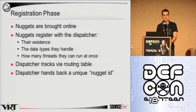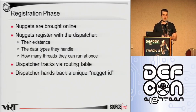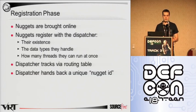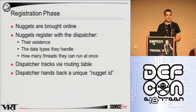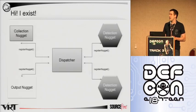Because we designed this as sort of a decentralized, distributed framework, all of the different nuggets have to be able to be added and removed fairly easily. And they achieve this via an API function call called register nugget. For now just know that it essentially lets the dispatcher know that it exists.